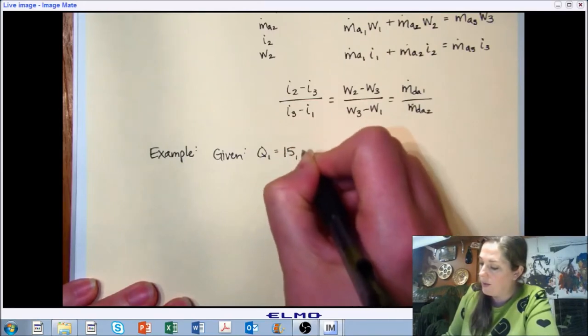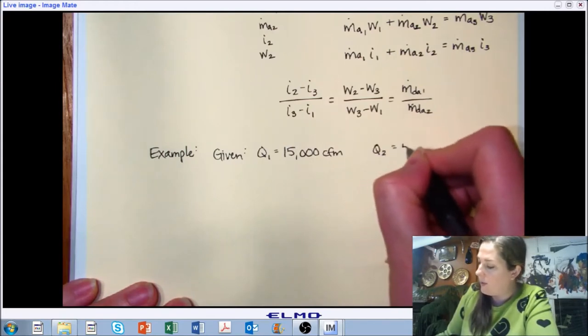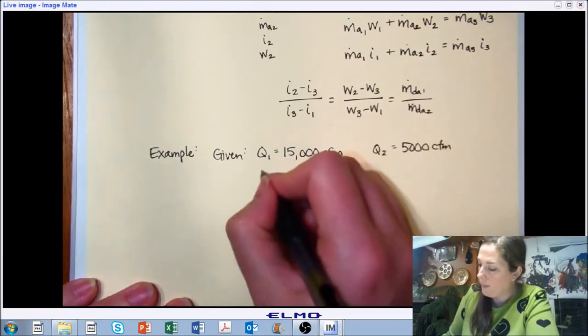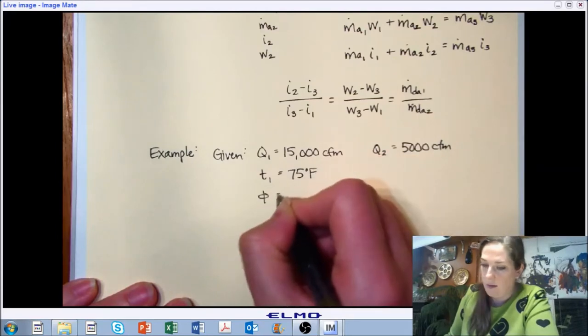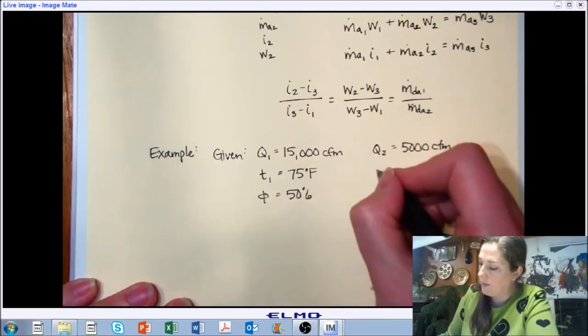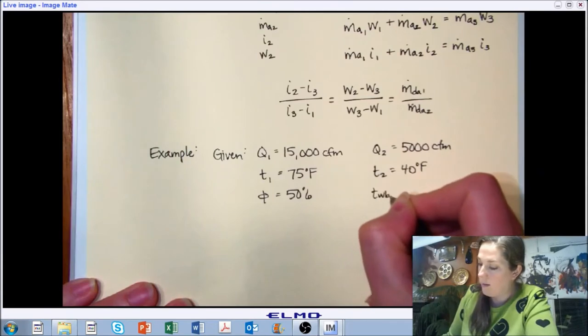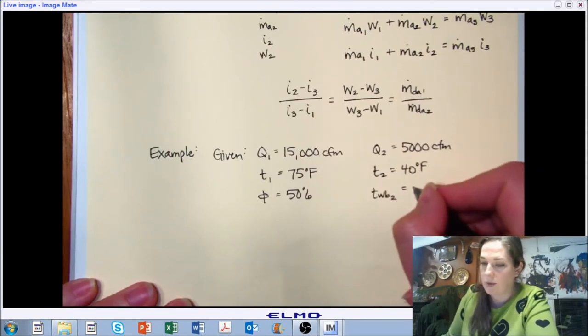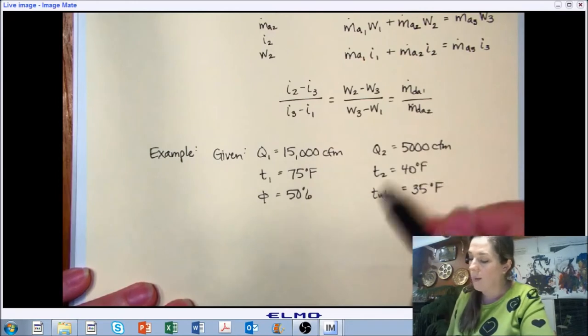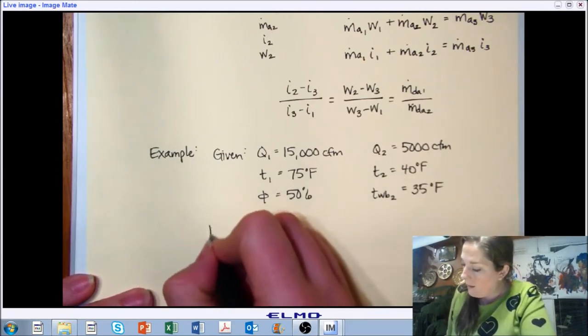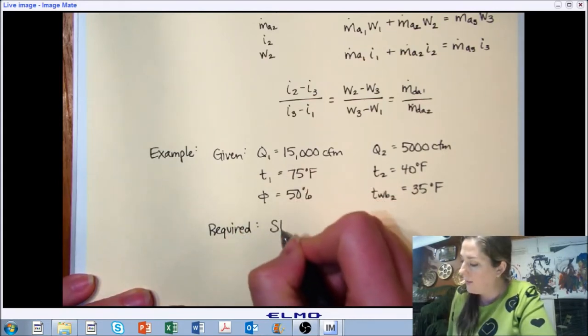So we're given two airstreams. One of them is 15,000 CFM. The other is 5,000 CFM. One is at 75 degrees Fahrenheit and 50% relative humidity. The other is at 40 degrees Fahrenheit. And just to trip us up, we have a wet bulb temperature instead of a relative humidity, but that's okay. We know how to deal with that because all we need is two properties to get all the other properties of a state point.